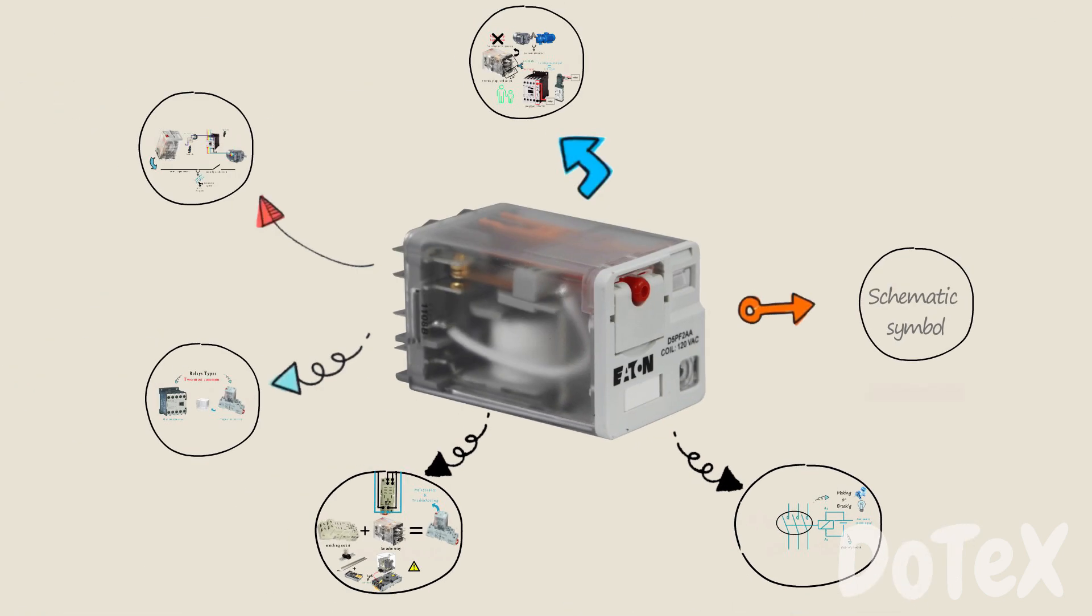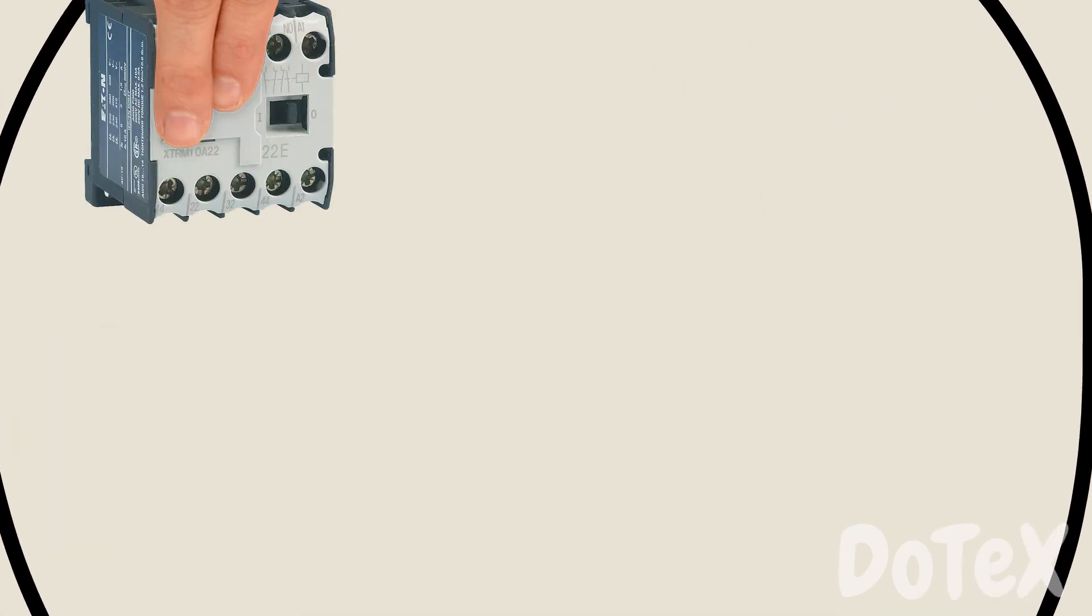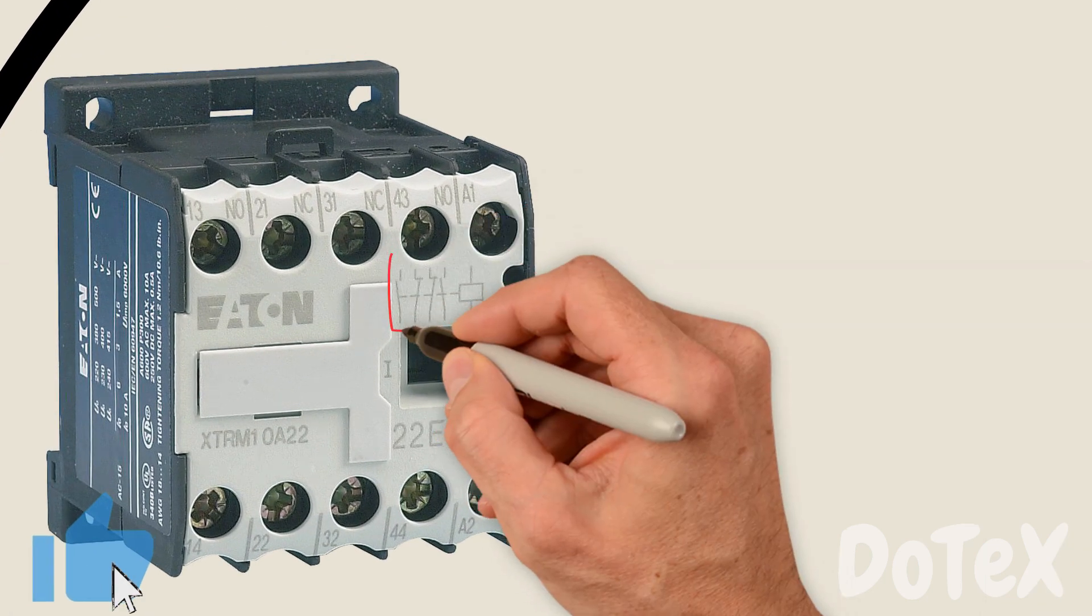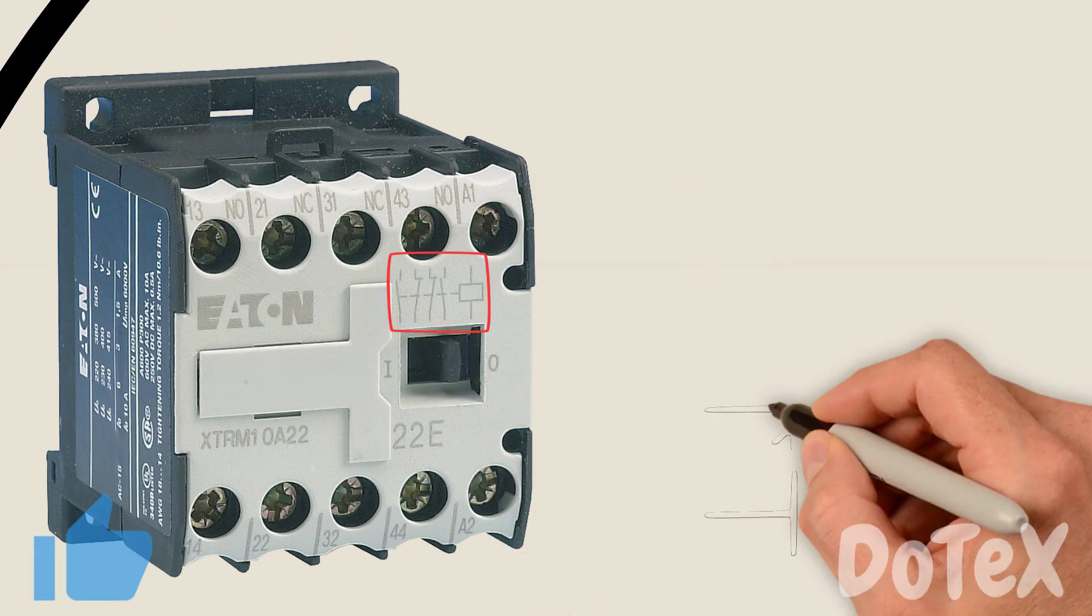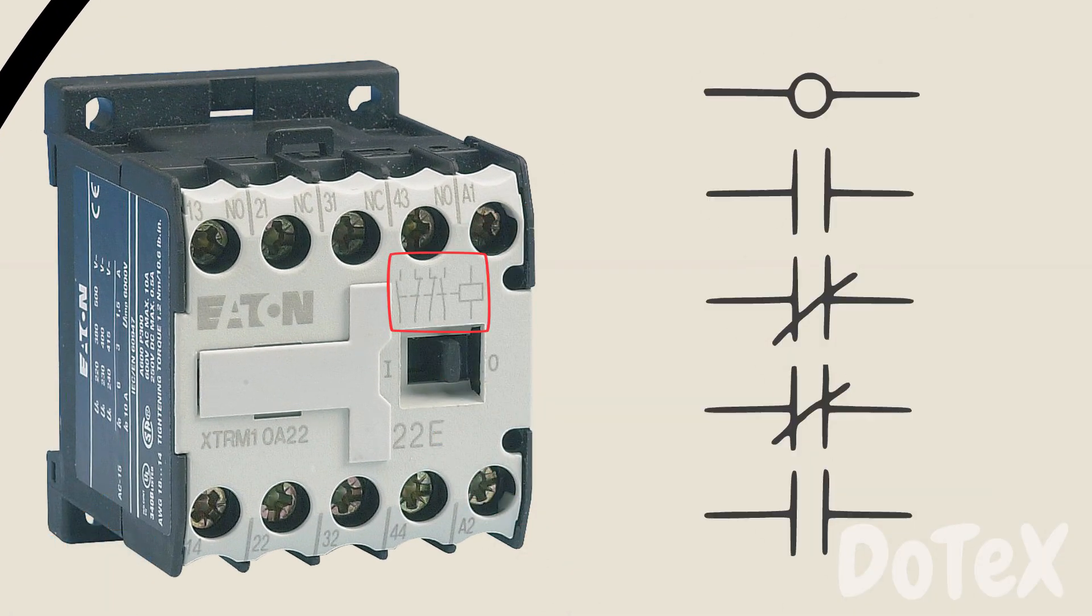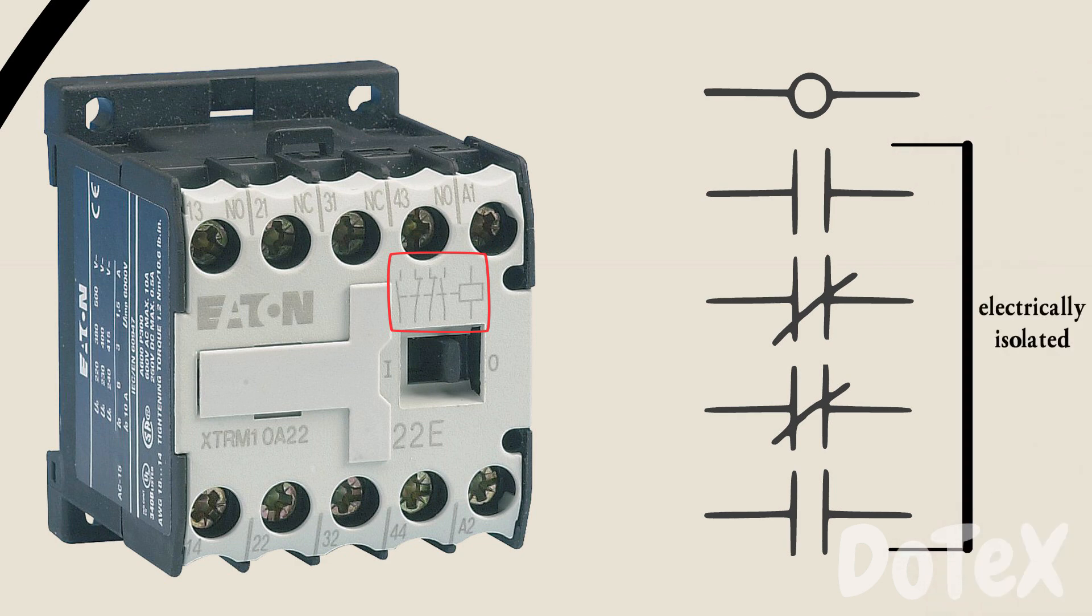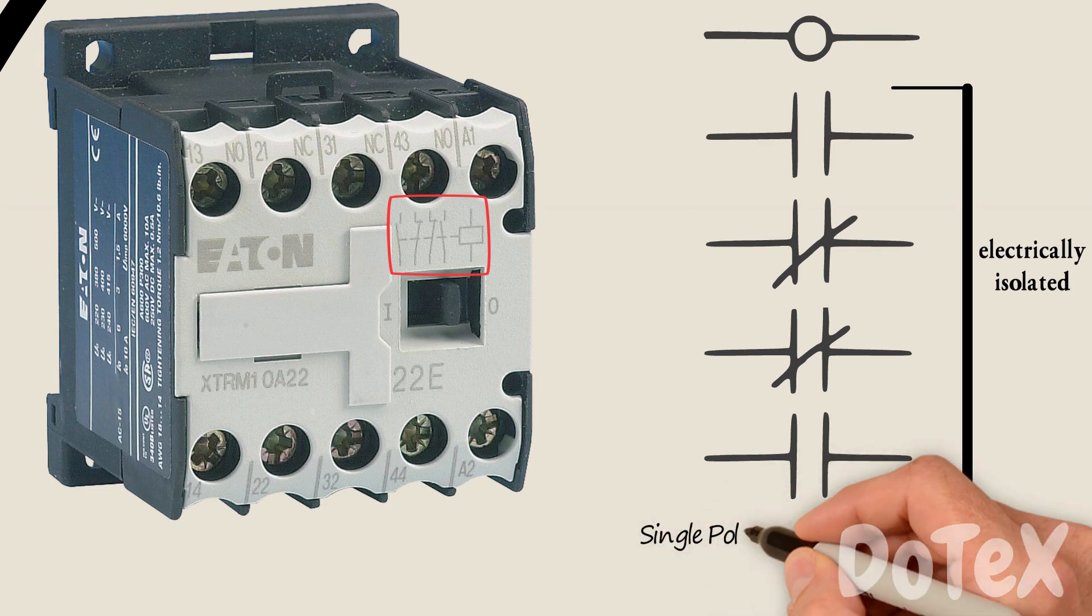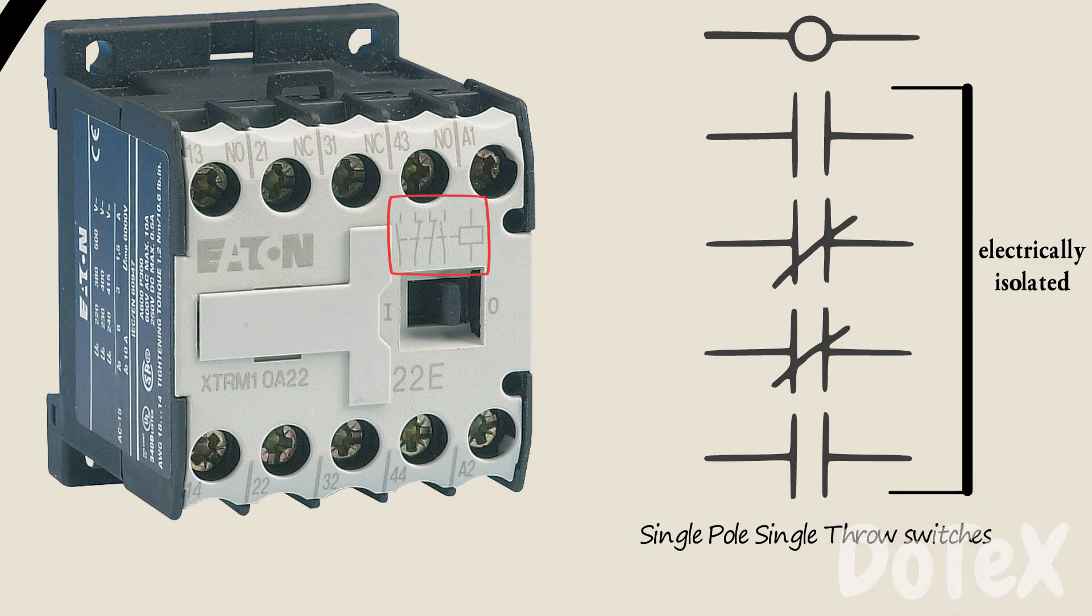Our last and most important point is the schematic symbol of a relay. For an industrial mini contactor relay as we see here, this is the schematic symbol. These contacts are electrically isolated and it's a single pole single throw switch.